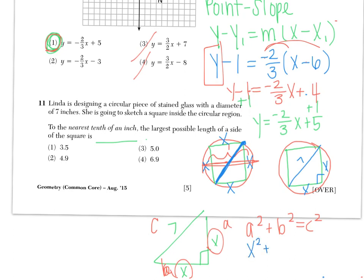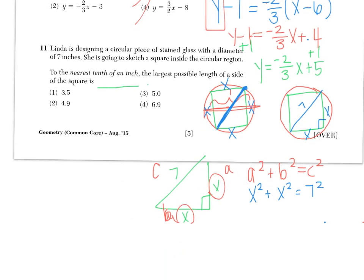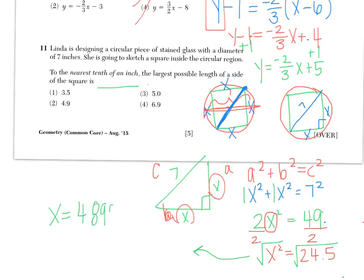So again, in this case, we had a is x squared plus b is x squared equals c is 7 squared. So now we have x squared plus x squared, that's a 1x squared plus a 1x squared to give us 2x squared equals 49. Our goal is to get x by itself, so first we need to divide by 2. So x squared equals 24.5. Then when we get x by itself, we're going to square root. So now we have x equals 4.9, rounded to the nearest tenth. Choice 2.